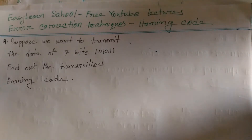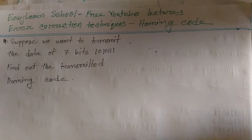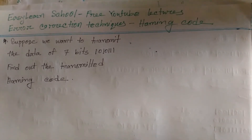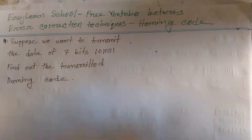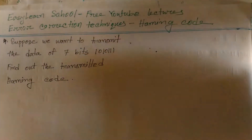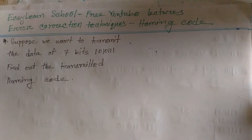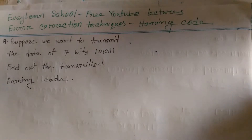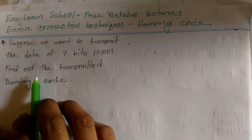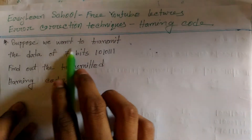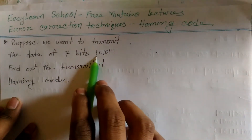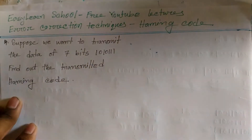We will use the sender and receiver data. We will use the correct method. We will detect many of the errors. In this tutorial, we will detect the code. First, we will verify the data. If we want to transfer the data to 7 bits, I will use the sender.